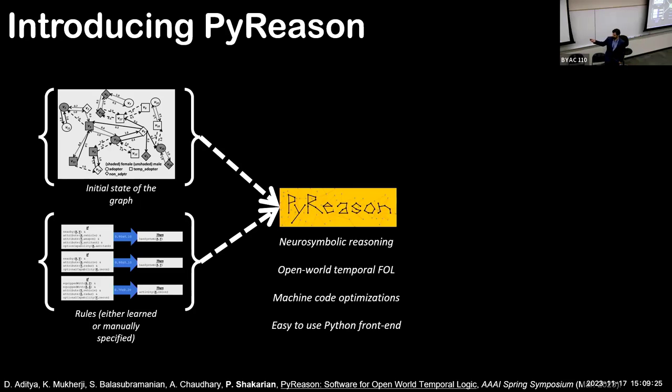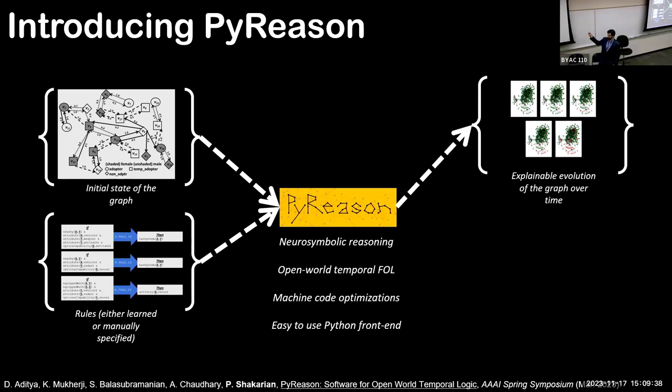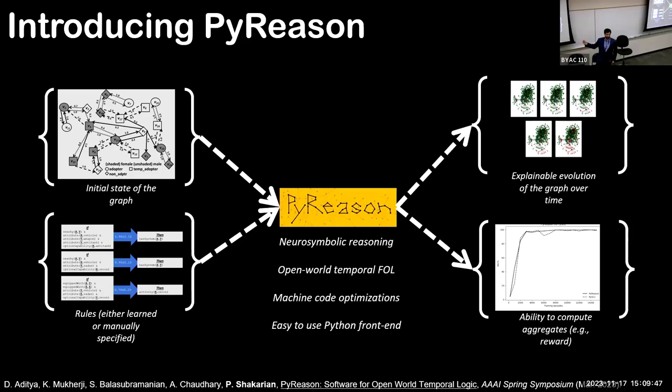We implemented annotated logic in PyReason. We did machine level optimizations to make it very fast and scalable, but it has a Python front end to make it usable for modern developers. And what you get as an output is you get the evolution of this graph over time, how it changes based on the logical rules. And additionally, the ability to aggregate the values associated with logical elements. So you can embed things like a reward function for reinforcement learning.